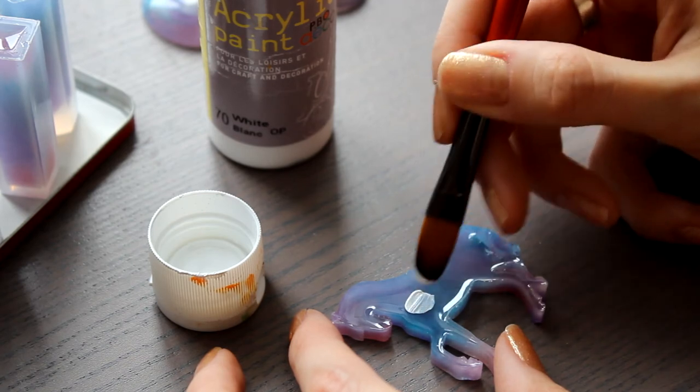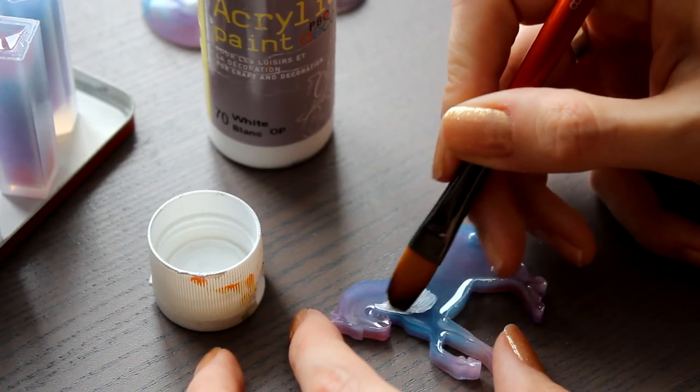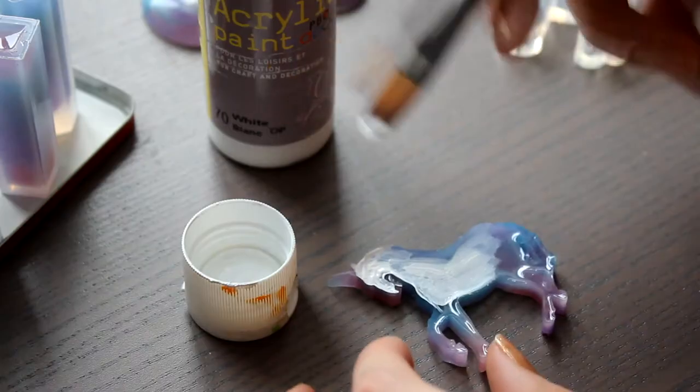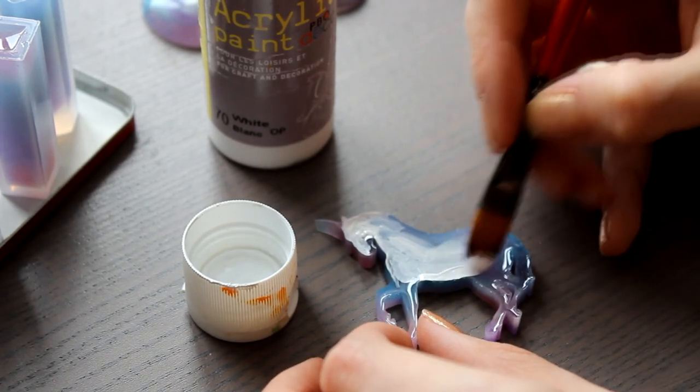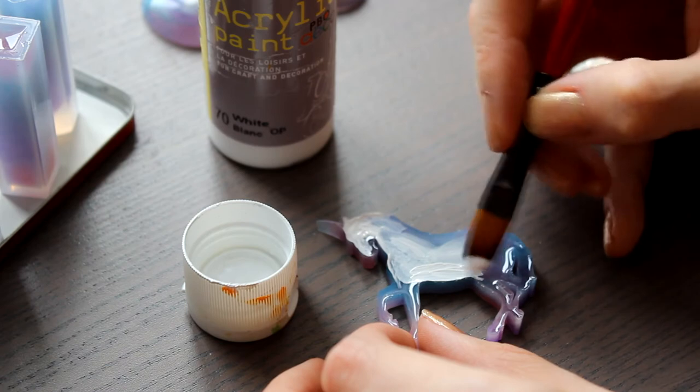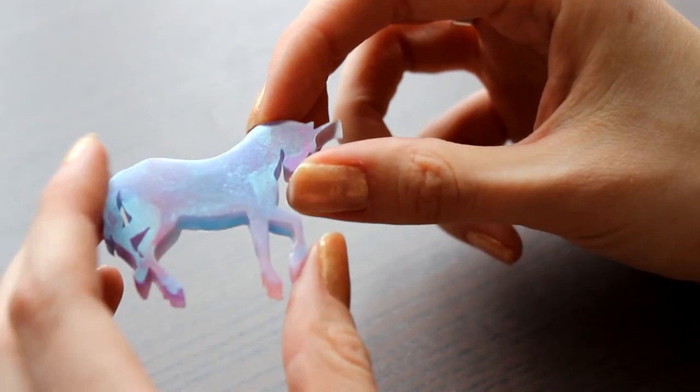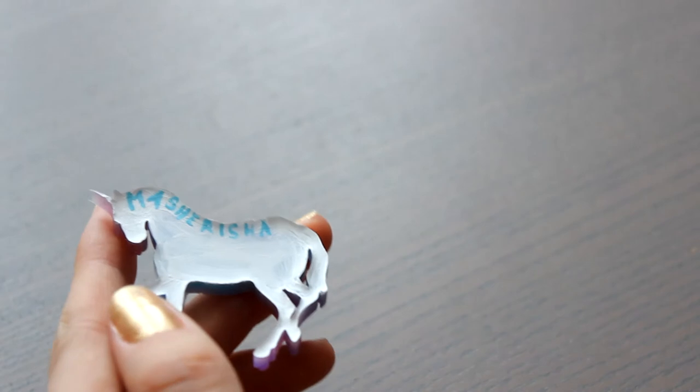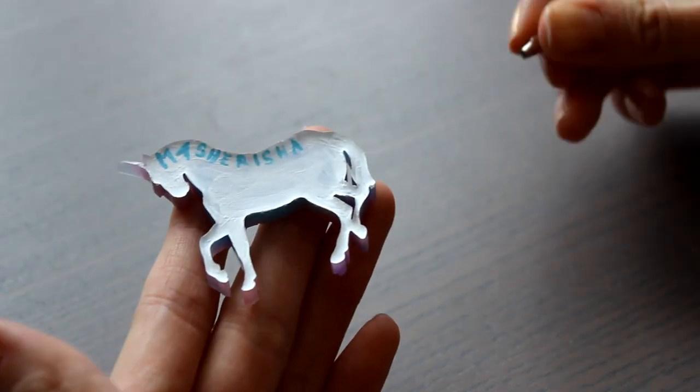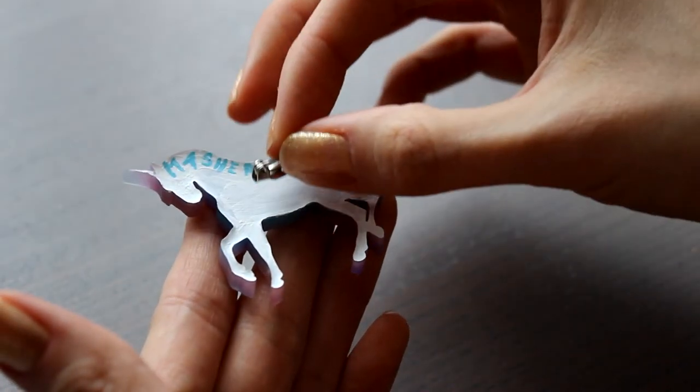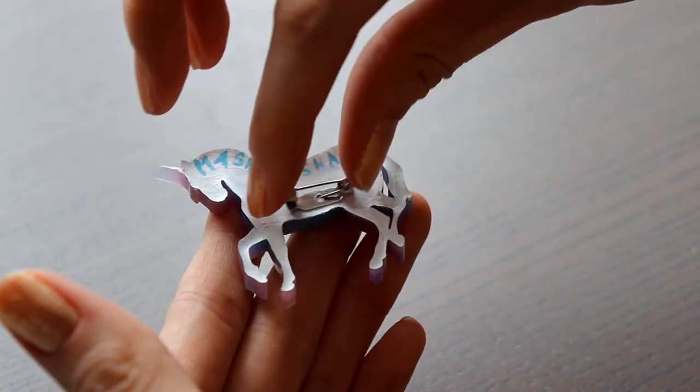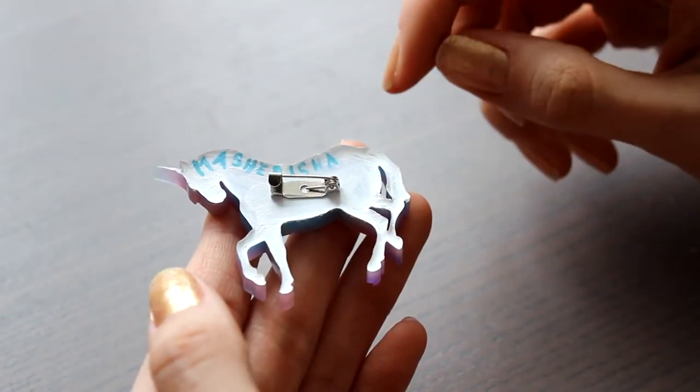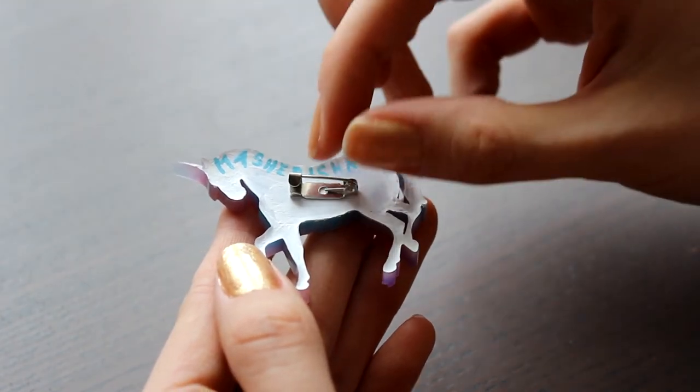I decided to cover the back side with white acrylic paint to make it less transparent, so on the front the unicorn would become a little brighter. Then I even decided to sign it. It actually was the first time I wanted to put my name on my work. Now I have only one thing to do. We need to attach the brooch base and make a thin coat of resin to cover the paint.